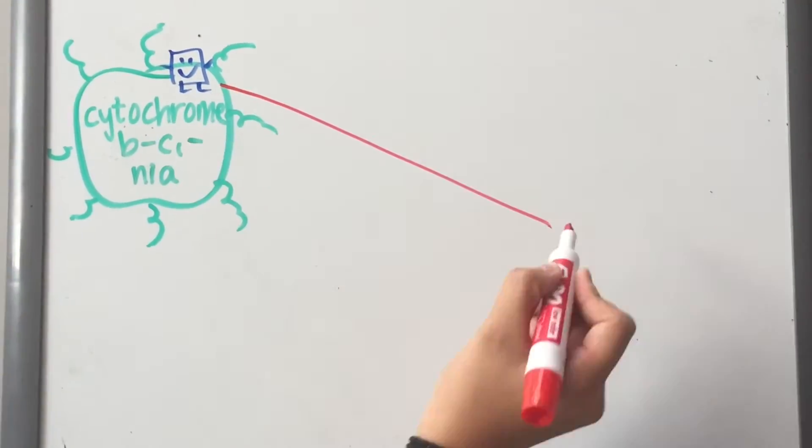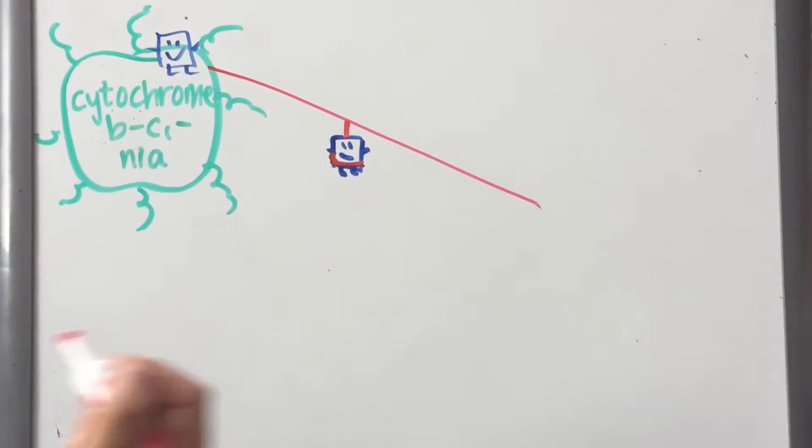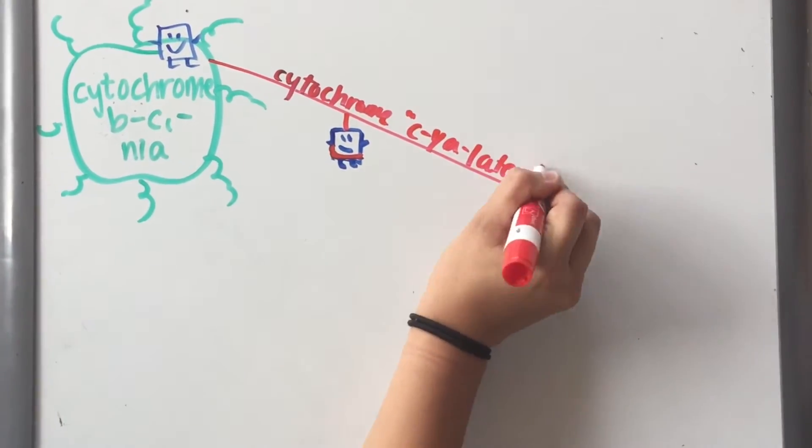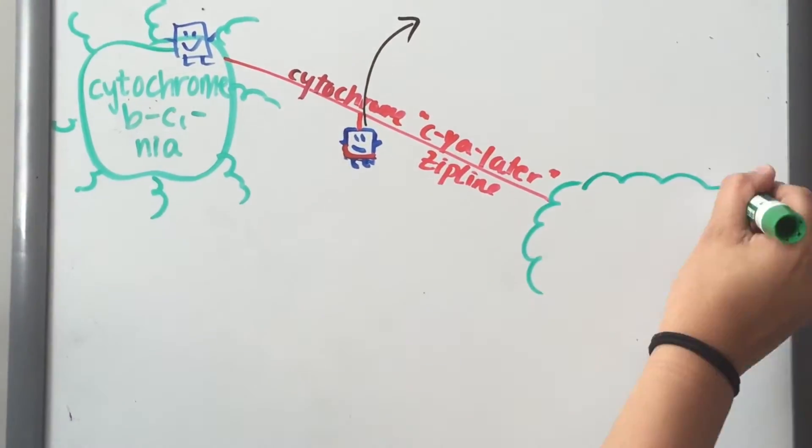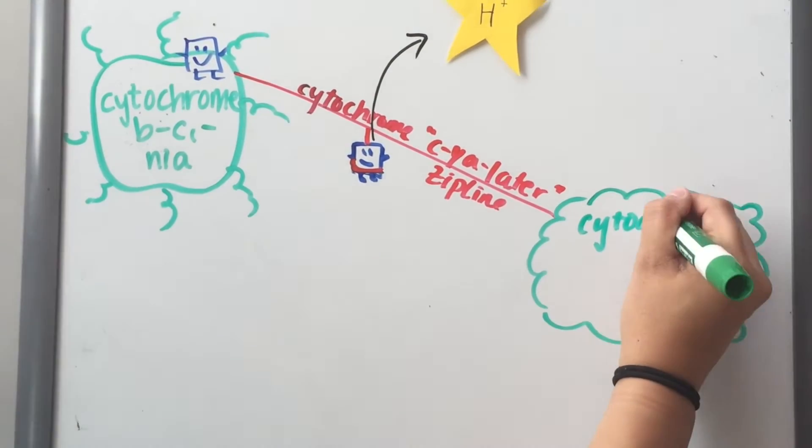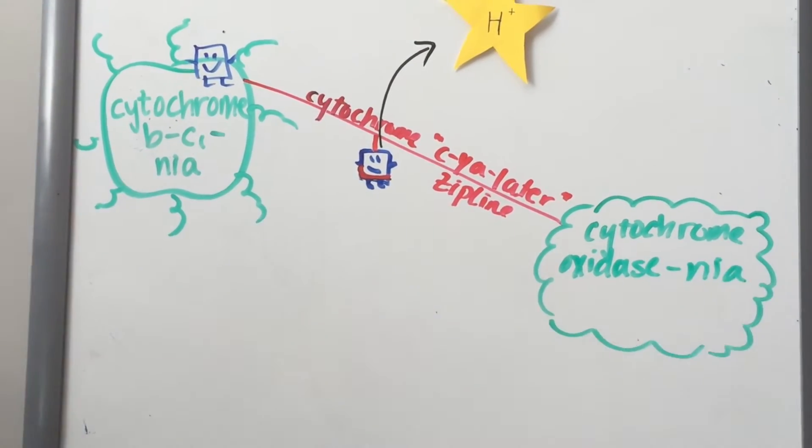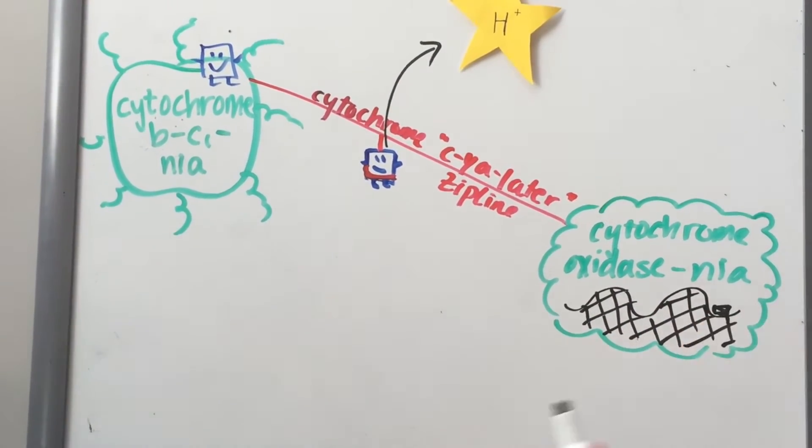Once they arrived in cytochrome BC1-nea, the two electrons must take a zipline one by one to go to cytochrome oxidase-nea, where they finally reach the Great Rollercoaster. Once they get onto the zipline, each electron releases another star to space.